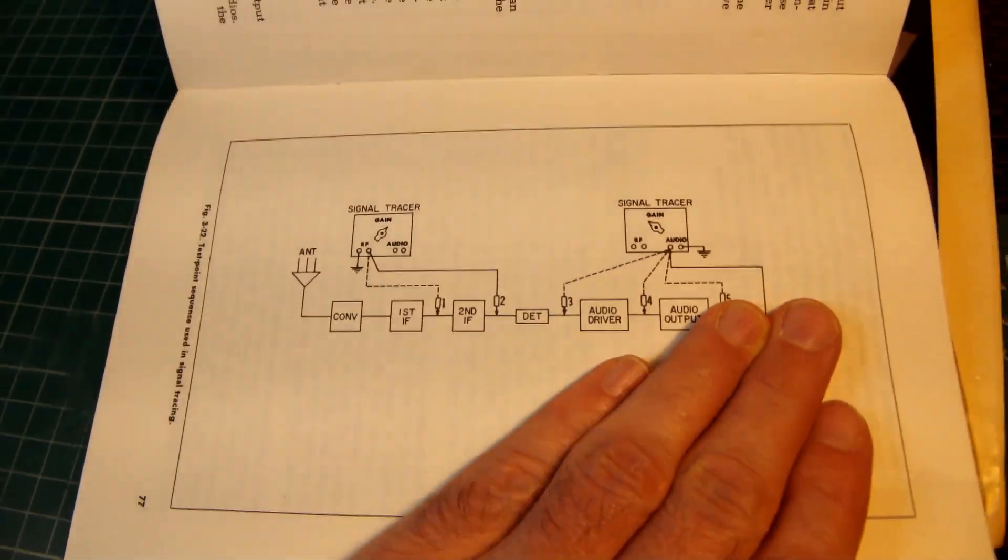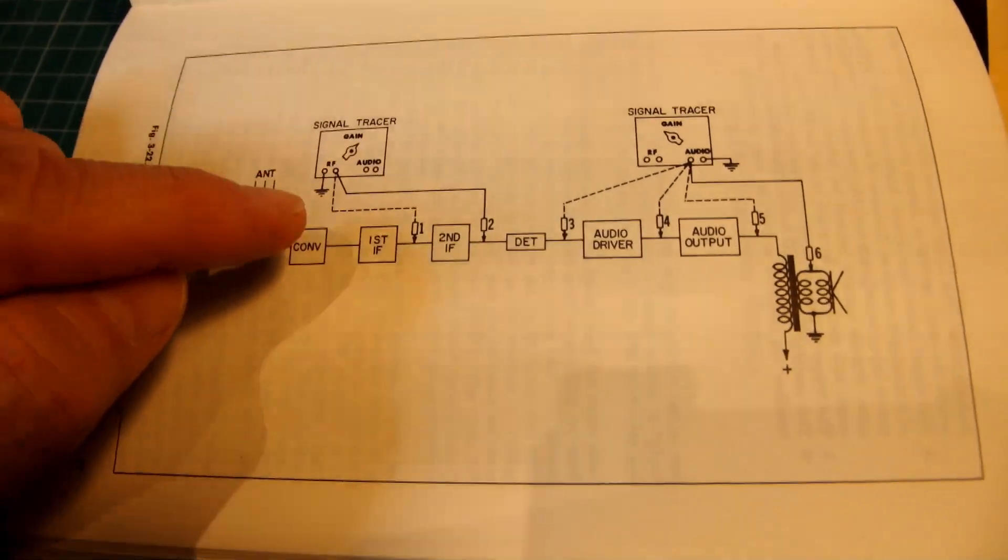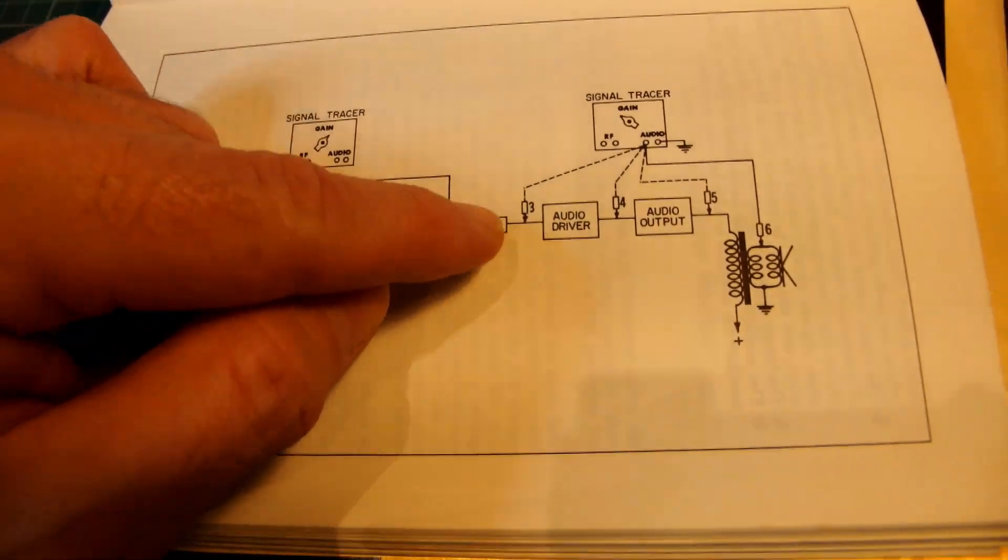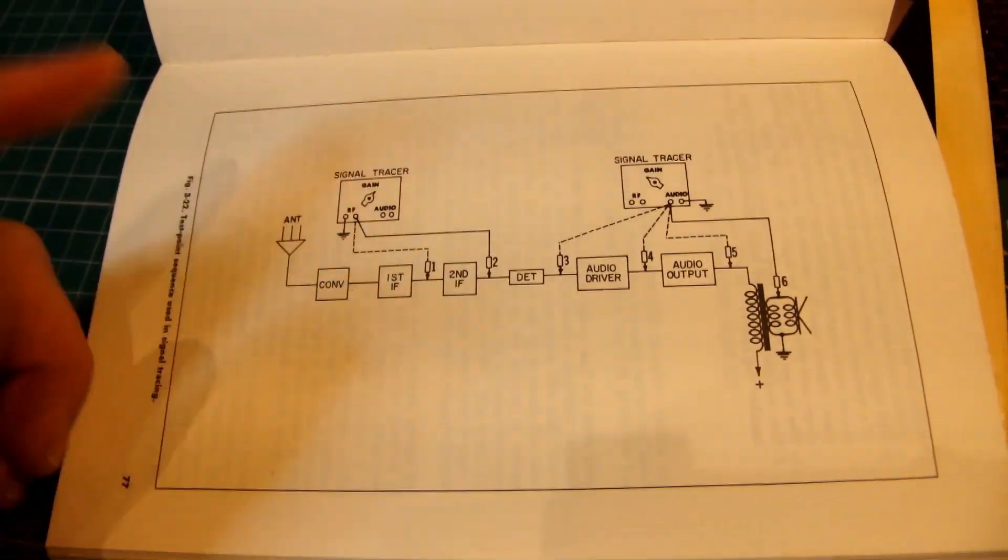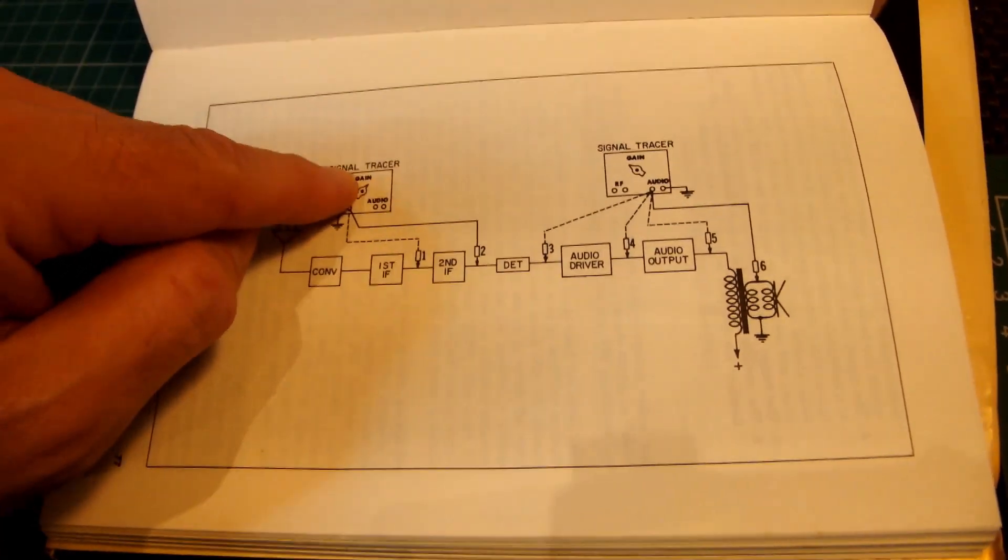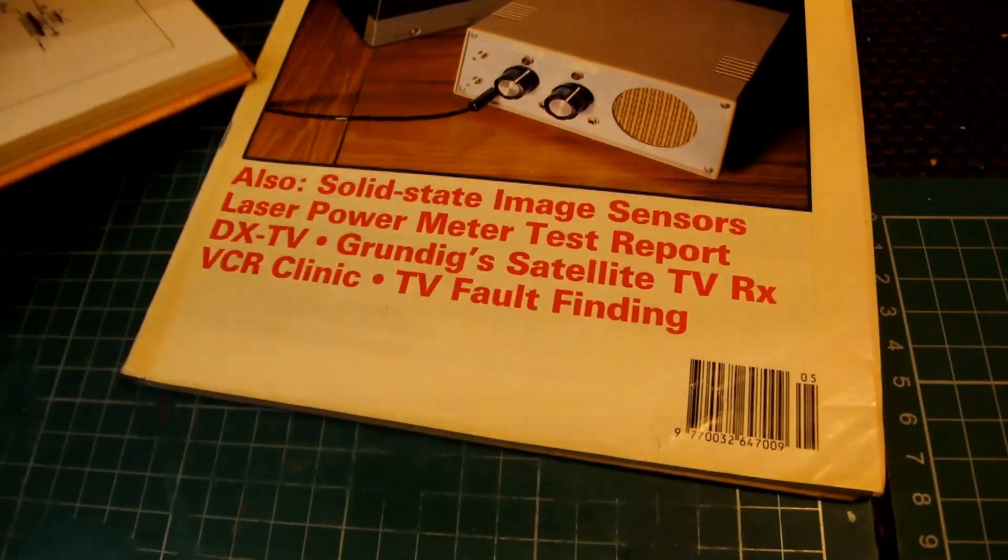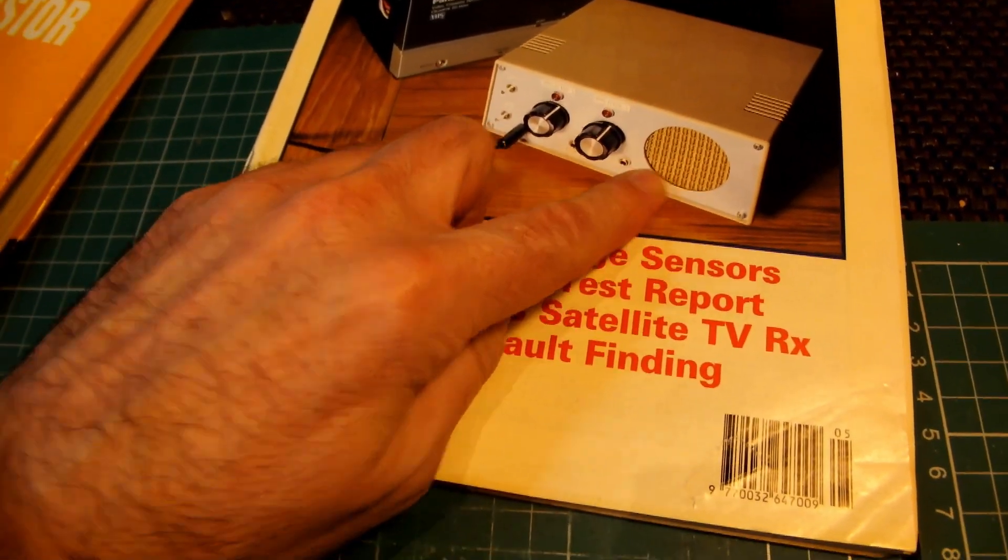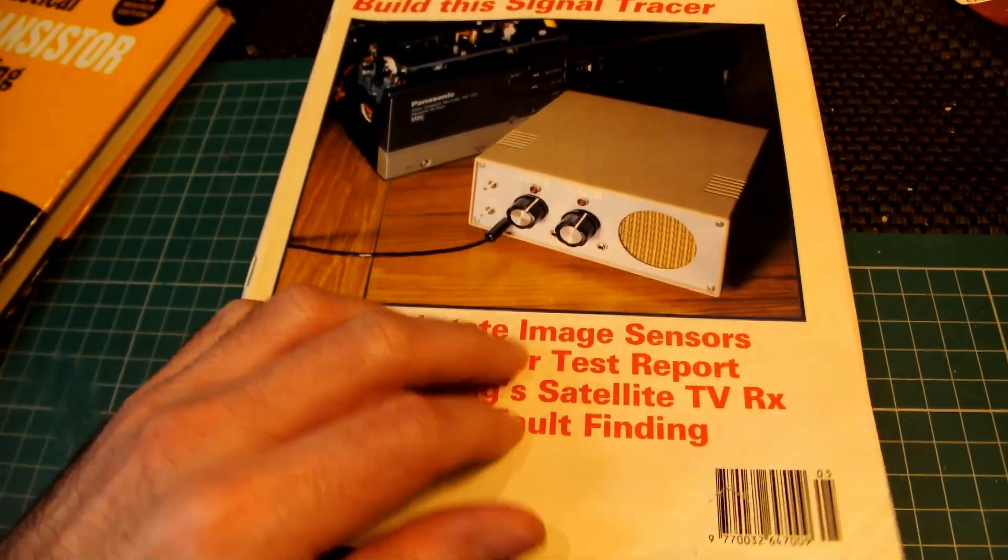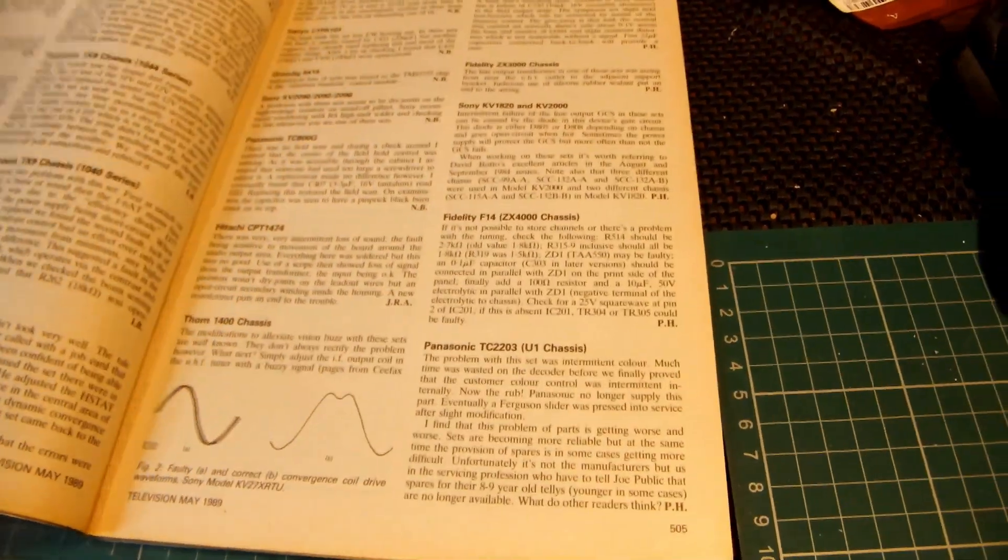The signal tracer lets you insert a probe at different points in the chain inside the radio. It diverts the signal into the amplifier and speaker in the signal tracer. So it's a useful debugging tool for working on transistor radios, and I'm going to give it a go.